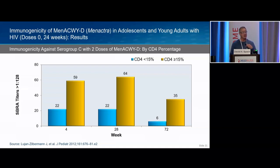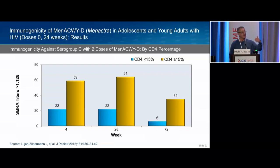One study I think was overlooked: examining the older Menactra vaccine in adolescents and young adults with HIV, serologic response was much better with higher CD4 counts. Since I don't view meningococcal as the highest priority vaccine, I personally tend to wait until somebody has suppressed viremia, and maybe consider waiting until CD4 is above 200. That's not in the guidelines — it's my own personal bias.